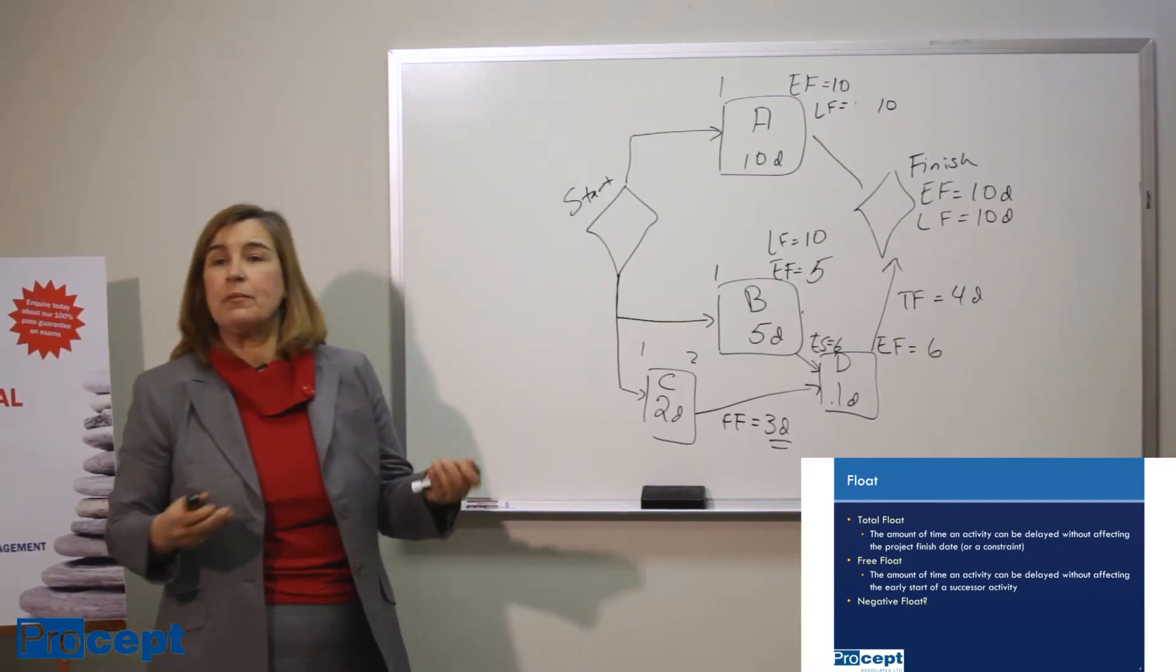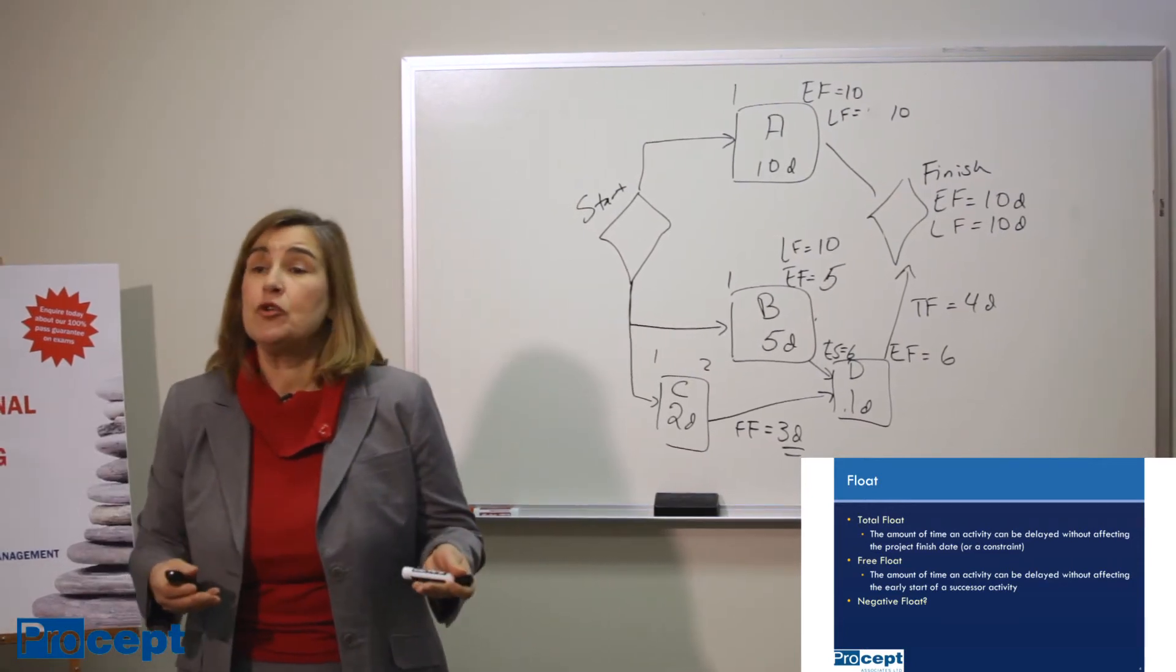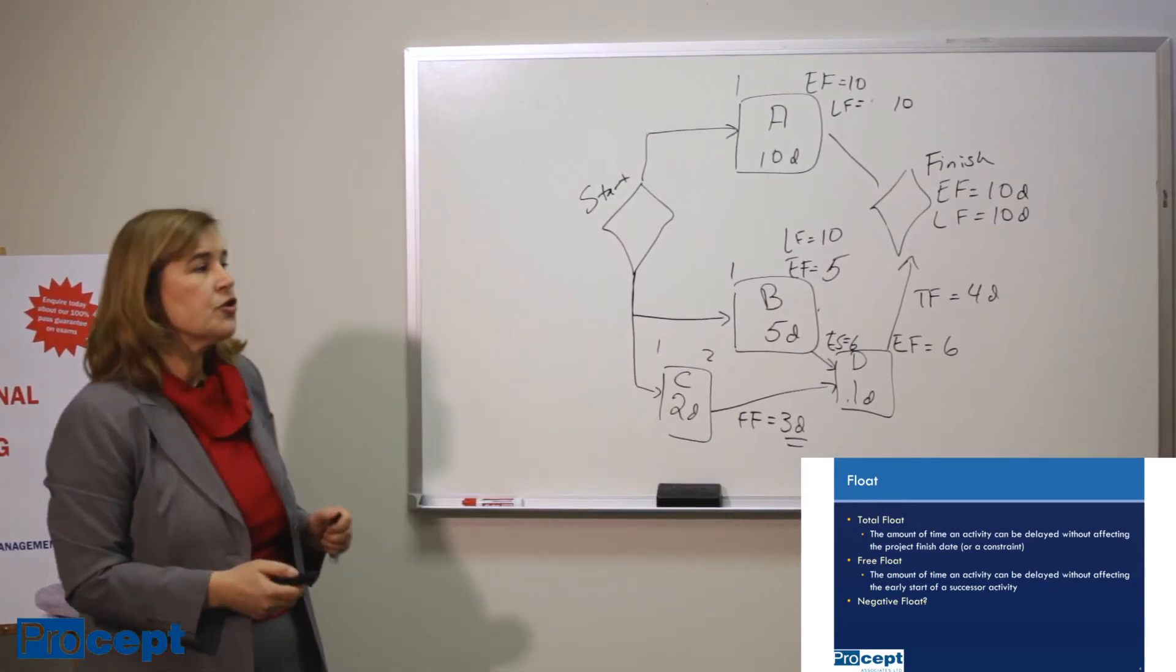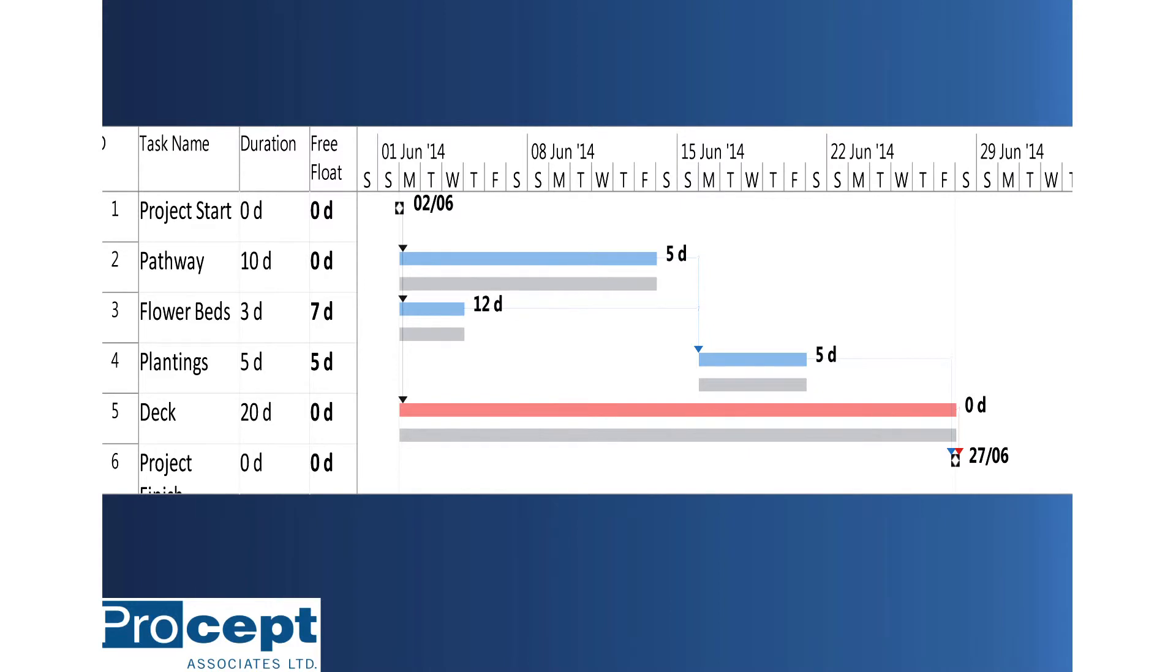So how do we apply this? The best way is to look at an example. So here is a little project, a landscaping project, and you can see total float next to each bar, and you can see free float in the spreadsheet.